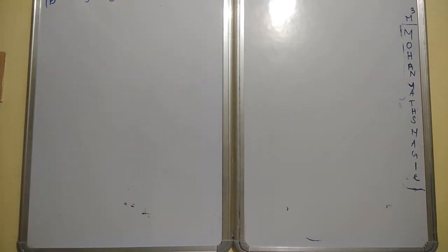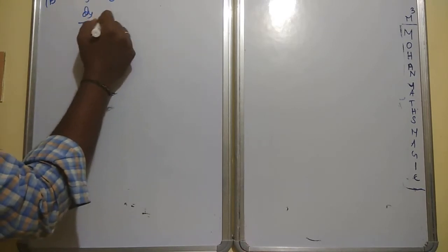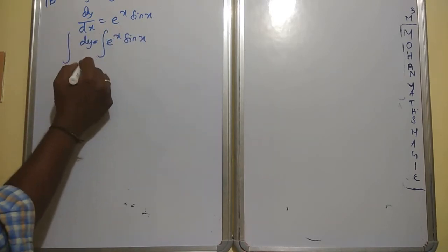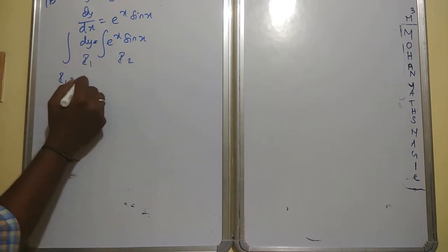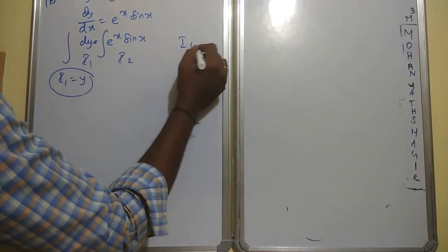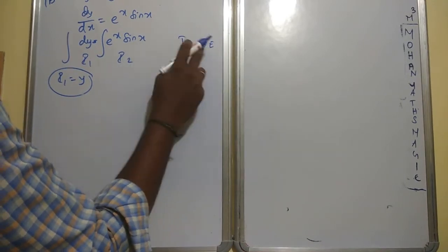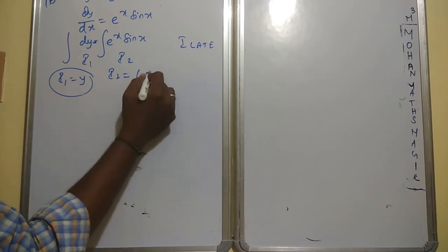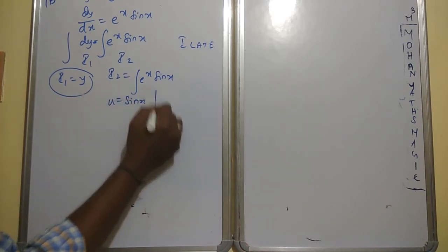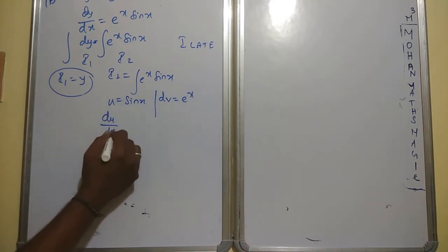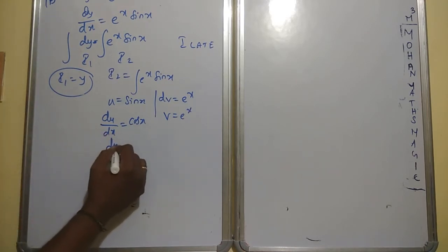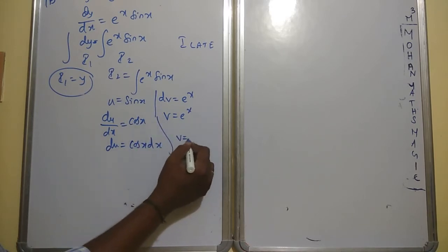Question 15: y' = dy/dx = eˣ·sin(x). There are no separate y terms, so dy = eˣ·sin(x)·dx. Integrate both sides: I1 = y, I2 = ∫eˣ·sin(x)·dx. For I2 we use integration by parts. Set u = sin(x) and dv = eˣ·dx.